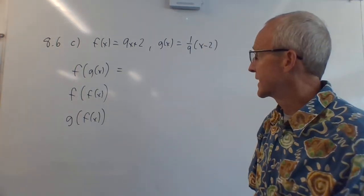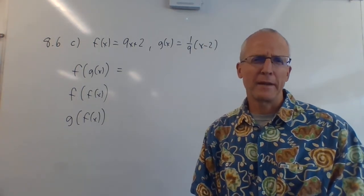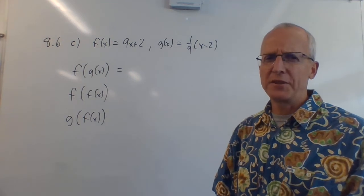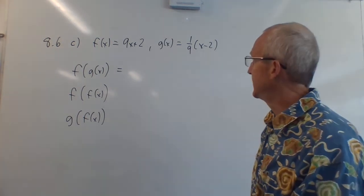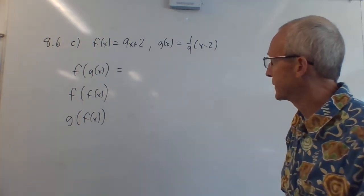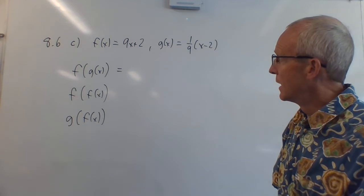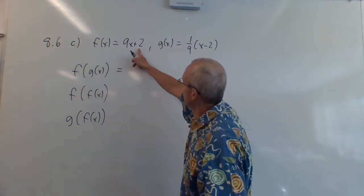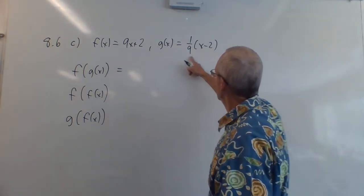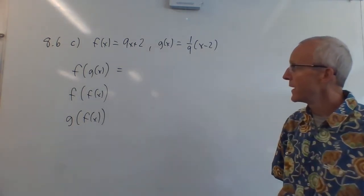Problem 8.6 is just getting used to this f of f of x thing, f of g of x thing. So I'm going to do part c here. I just chose a random one to help you out. So f of x, our function is 9x plus 2, and g is 1/9x minus 2.